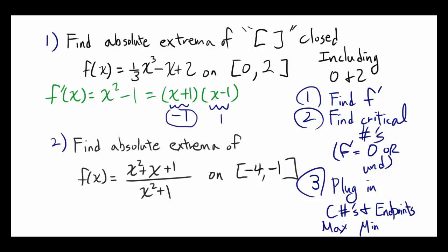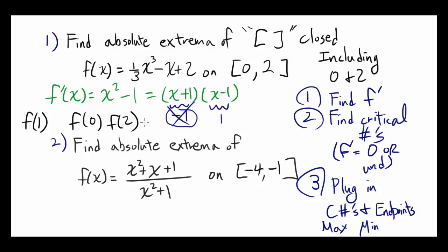x = -1 is not in our interval [0, 2], so we are not going to count that — we only care about x = 1. Now we plug in the critical numbers and the endpoints into f: we evaluate f(1) because 1 is a critical number, and we also evaluate f(0) and f(2) because 0 and 2 are the endpoints.